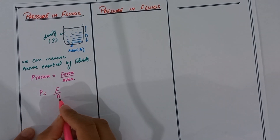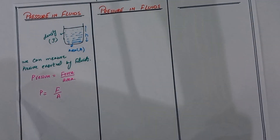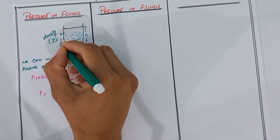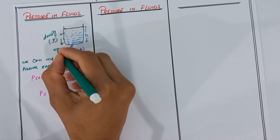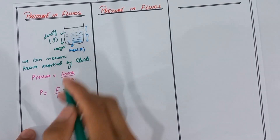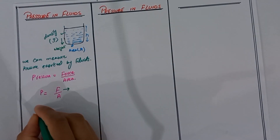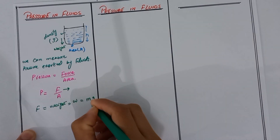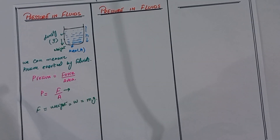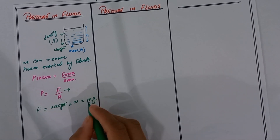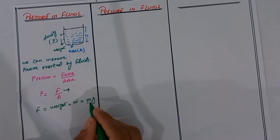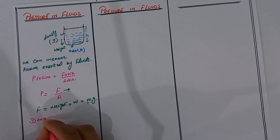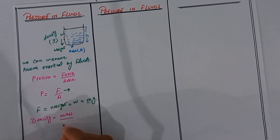Here we know the area of the container but we don't know the force. We can calculate the force by the weight of the water that is acting downward. This force is equal to the weight of the water, so F equals weight W, which equals mg. Density equals mass over volume.